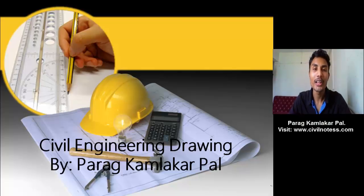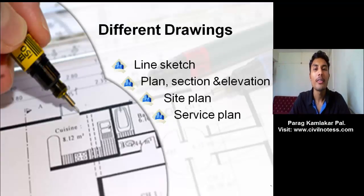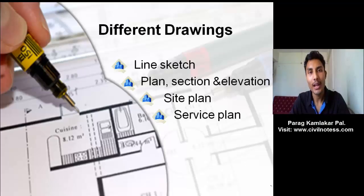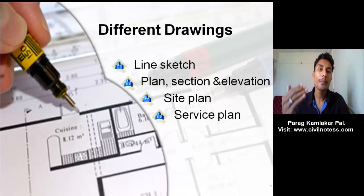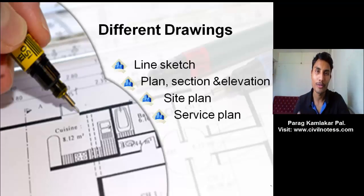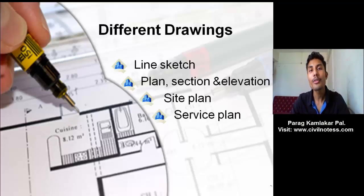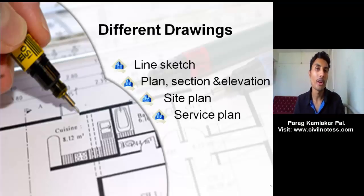Hello everyone, my name is Paragpal. As you know, each and every time I bring a new video for you. In this video I am going to deal with the different civil engineering drawings. Here you can see the different drawings: line sketch, plan, section and elevation, site plan and service plan. This is the process from starting with the line sketch to the service plan — a starting to ending process. I am going to explain how the building relates to these drawings.